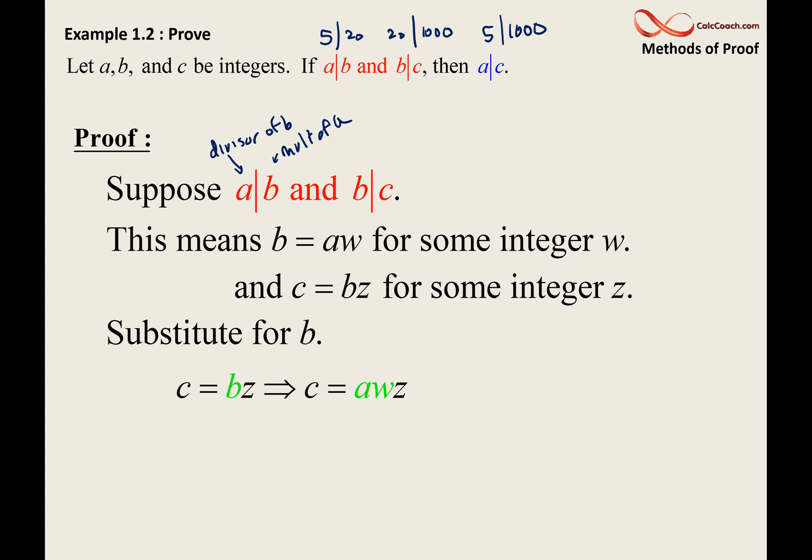Almost done. You see, our job is to show that a divides c. By definition, that means that c can be written as a multiple of a. We have it. This wz, we can rename to some other variable y. And we have exactly what it means for a to divide c. That c can be written as a times some other integer. And all we did was really substitute. We took the definition, and we substituted. And we did the proof.